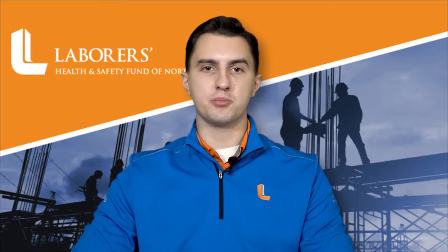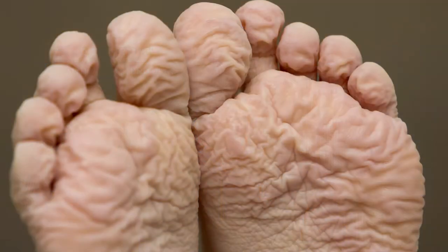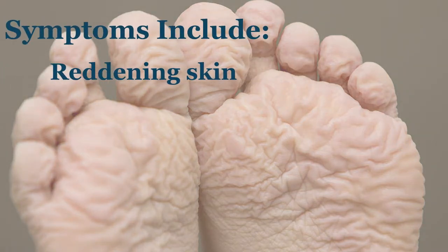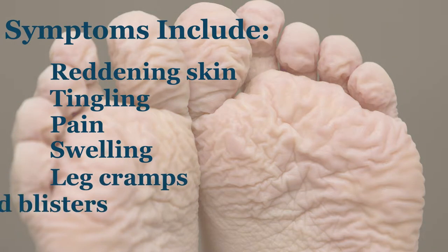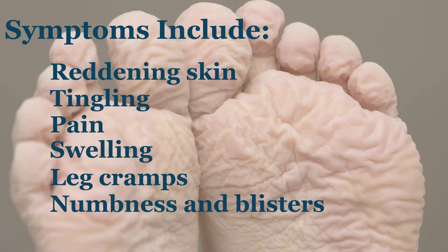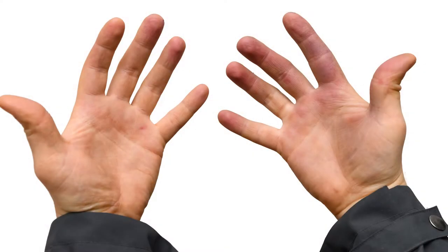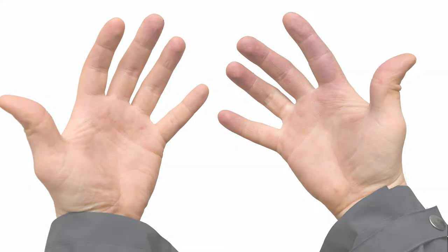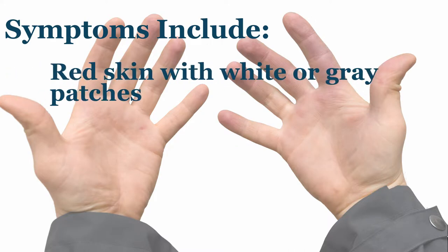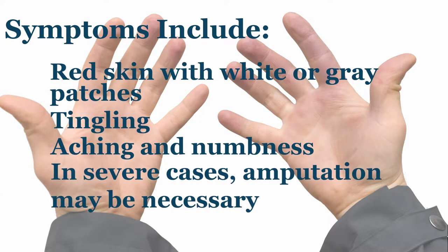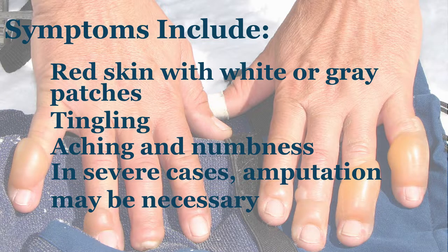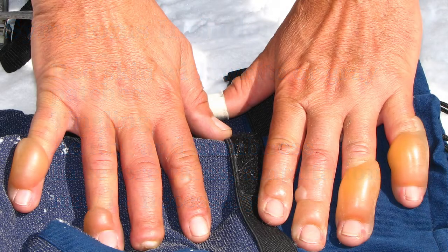Some common examples of cold stress injuries and illnesses include trench foot, a foot injury caused by prolonged exposure to wet and cold conditions, and frostbite, an injury that occurs when skin is exposed to freezing temperatures. It typically affects extremities like fingers, toes, the nose, and ear lobes, and can cause permanent tissue damage.